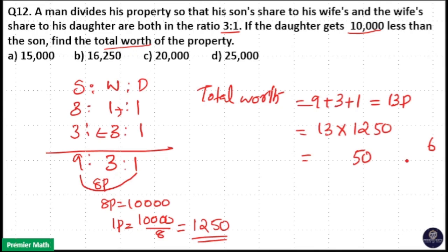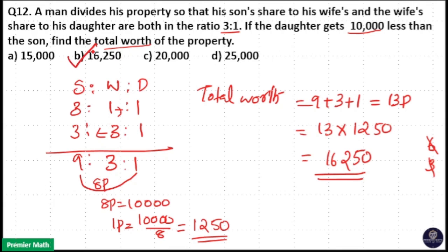13 into 2 is 26, plus 6 carried over equals 32. Write down 2, carry over 3. 13 into 1 is 13, plus 3 is 16. So the answer is 16,250. Option B is your answer.